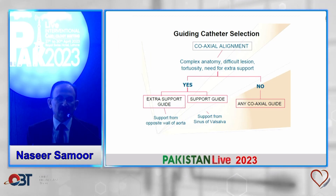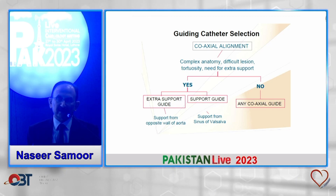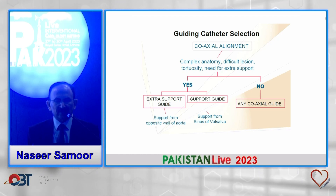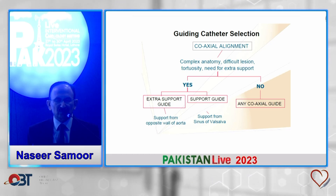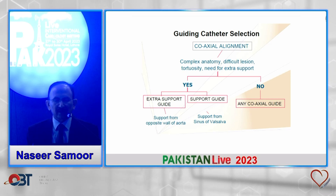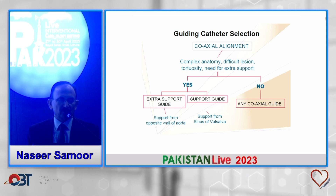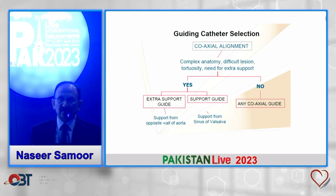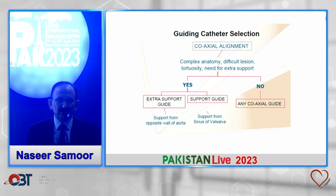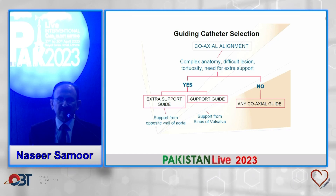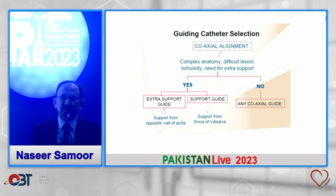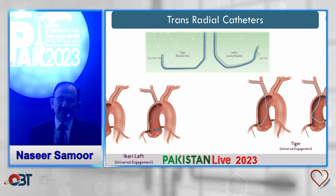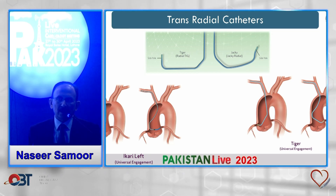In summary, guide selection depends on coaxial alignment — all guides need to provide good coaxial alignment. If there is a complex anatomy, tortuosity, or need for extra support, one should go for an extra support or power support guide. For simple lesions with no calcification, no tortuosity, and a horizontal course, a simple Judkins catheter can suffice.